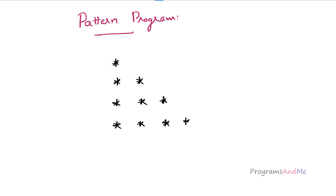Before writing the program, let's see what is the input and output of the program. We already know the output — we want stars in the right triangle shape. For the input, we will ask the user to enter the number of rows they want in the output.